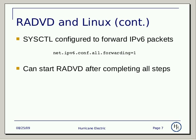After configuring RADVD, you'll need to make sure that sysctl is configured to forward IPv6 packets. By default, all interfaces need to get the forwarding configured. So in sysctl.conf, you would set the following flag that we have as an example.